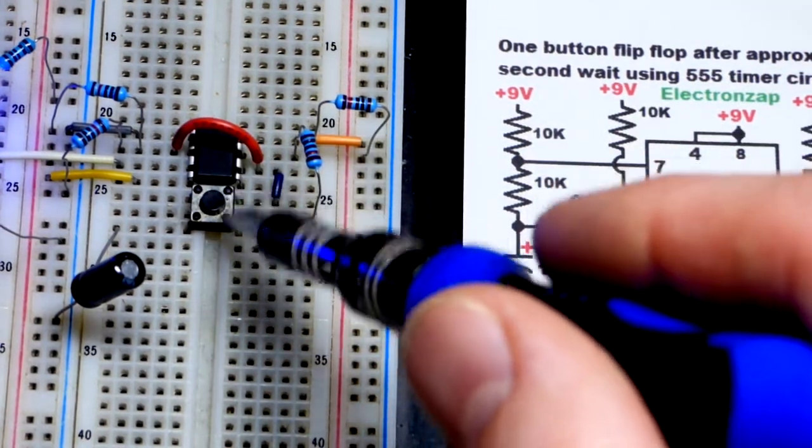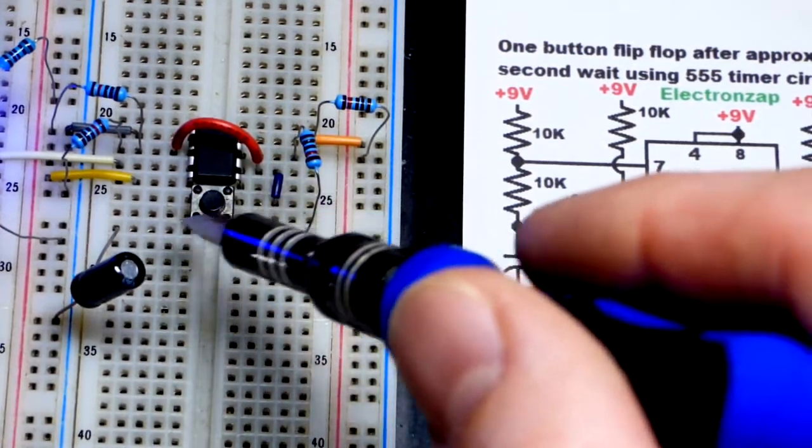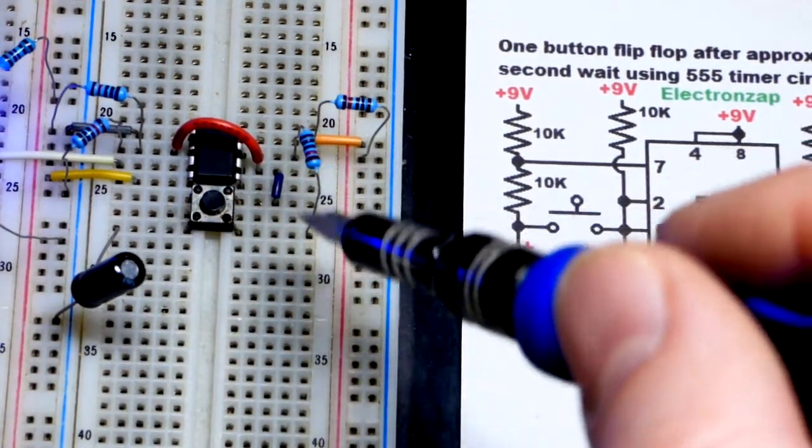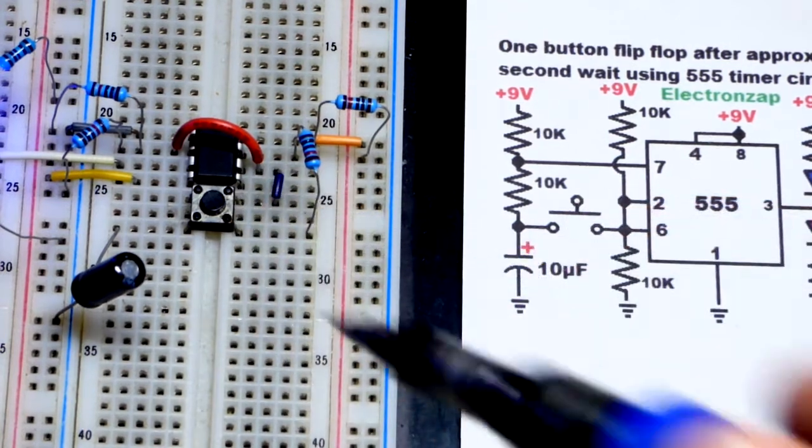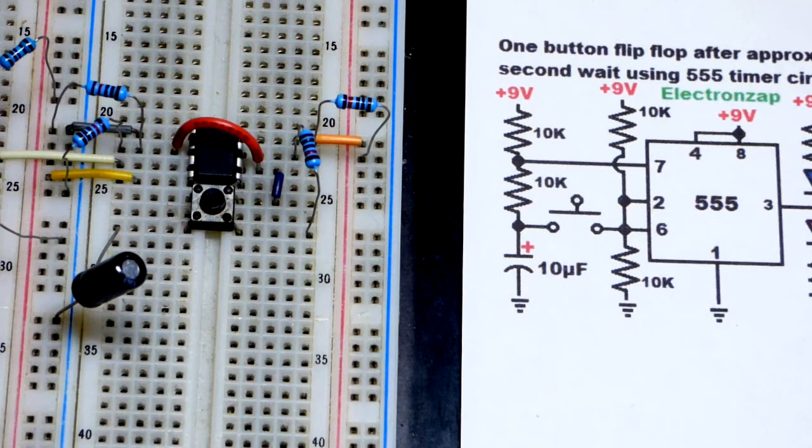The switch here is not connected right now, so the capacitor can charge and discharge freely. But the signal doesn't make it to that other jumper until I press the button right there. That's when the signal gets there.